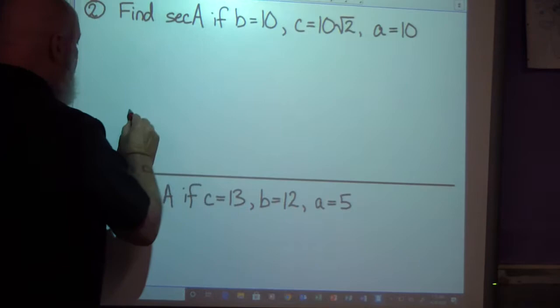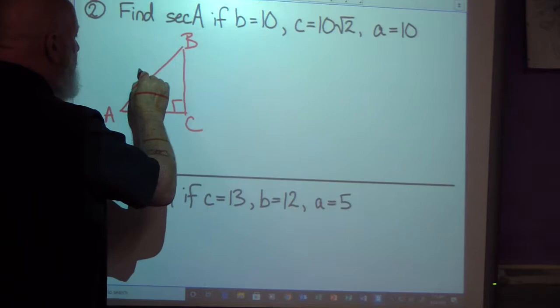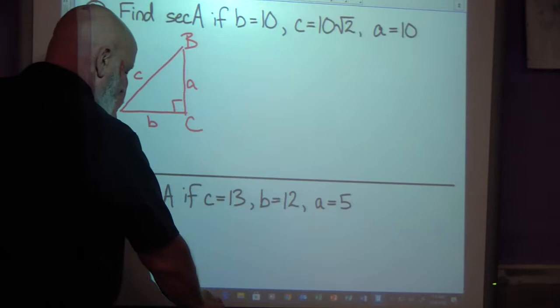Find the secant of A. If B is 10, C is 10 radical 2, and A is 10. So I'm going to again sketch a right triangle that's not to scale. Label A, B, and C. Side C is opposite angle C. Side A is opposite angle A. And side B is opposite angle B. I'm going to label my sides. Looks like side B is 10.